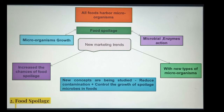When we talk about food spoilage, except for sterile foods, all foods harbor microorganisms. Food spoilage stems from the growth of microorganisms in food or is due to the action of microbial enzymes. With new market trends and consumer desire for foods that are not overly processed and preserved, the chance of food spoilage with new types of microorganisms has greatly increased. New concepts are being studied to reduce contamination and control the growth of spoilage microorganisms in food.